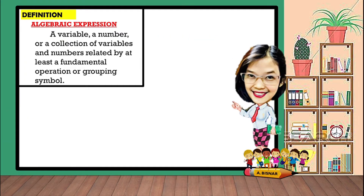For example, say we have A. From the definition, it is considered as an algebraic expression because it is a variable. For number 2, say we have 7x. It is also considered as an algebraic expression because it is a number and a variable.